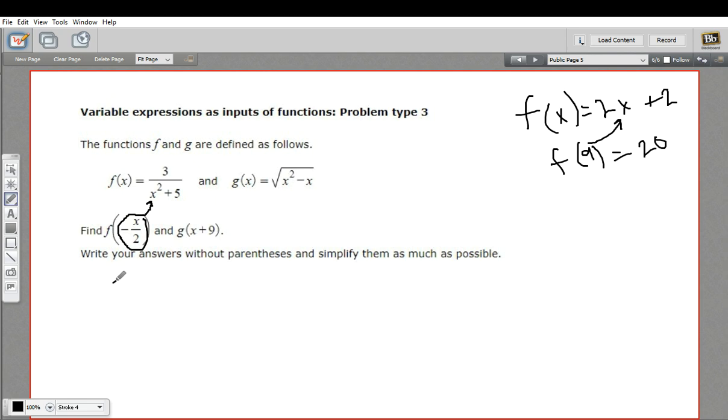What that means is I'm putting this expression in for x in the function. So that would be 3 over, and I'm just going to do a quantity here. Here's our input, negative x over 2, so that's in place of the x. And then the x is squared in the original function, so this gets squared as well, and then I have the plus 5. And then we just need to...